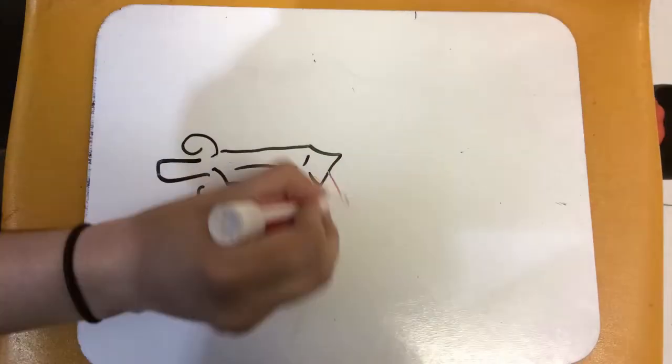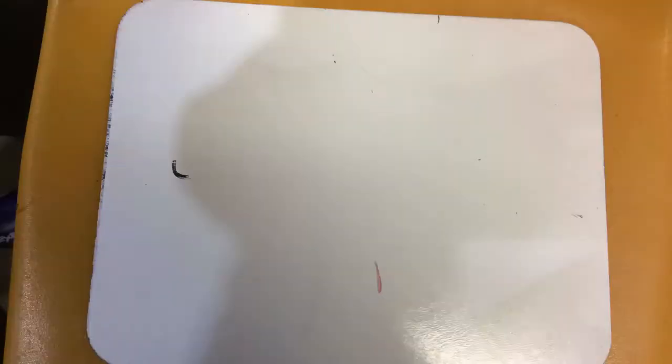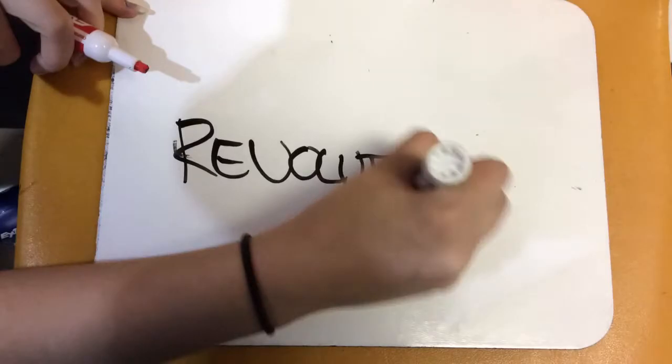Lenin found revolutionary faith in Marx and socialism. Three ideas were central to him. One, capitalism could be destroyed only by violent revolution and denounced all theories of a peaceful evolution to socialism.